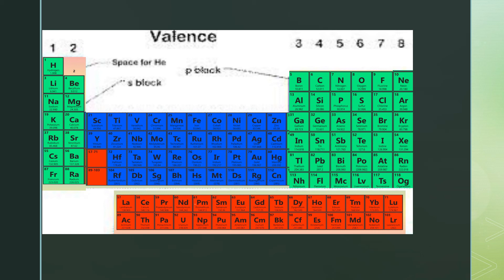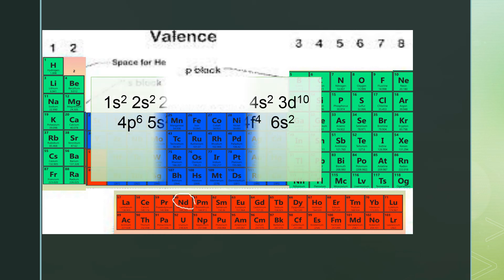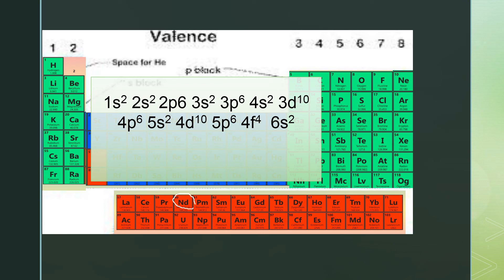I am going to take the example of neodymium, with atomic number 60. You can see its electronic configuration on your screen. This is the 4f subshell with four electrons. The lanthanide series occupies the 4f orbitals, in which the last electron is coming, while in the actinide series the last electron comes in the 5f orbital.